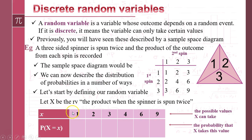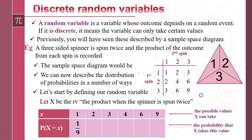I'm going to use little x to represent all the different possible values we could have. What I'm asking is: what's the probability that our random variable, capital X, equals each value? In this box I'm going to put the probability that capital X equals 1, then the probability that capital X equals 2, and so on. The probability of getting a 1 is 1/9, a 2 is 2/9, a 3 is 2/9, a 4 is 1/9, a 6 is 2/9, and a 9 is 1/9. So we've got a table showing the probabilities of each outcome for our random variable.